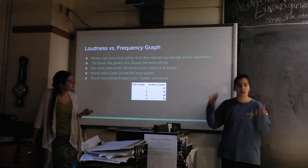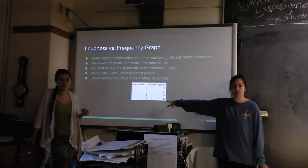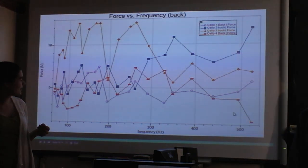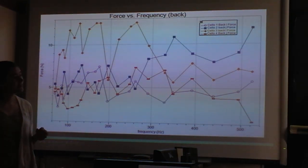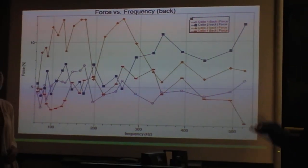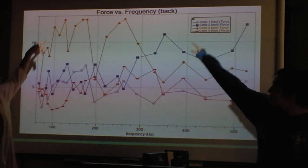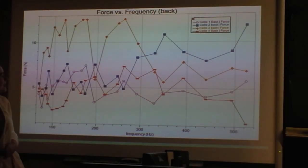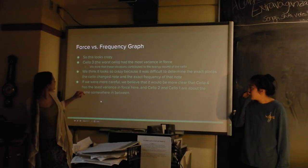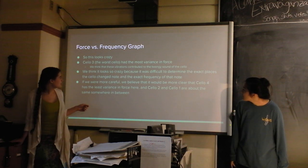As you can see with the various cellos, remember cellos one and two were in the middle, cello three was the worst, and cello four was the best, which we thought was interesting. We decided to make a graph of force versus frequency by each note. Cello four is this red line and it kind of moves but not really, as compared to cello three, which has these huge peaks. That would indicate that the force changes a lot, so it vibrates a lot. It looks crazy.